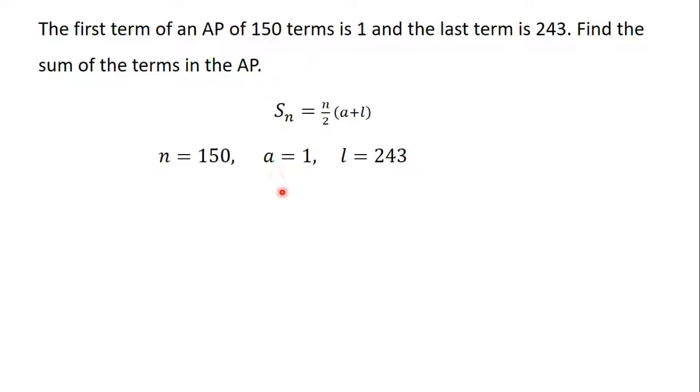The AP has 150 terms, so the sum of the terms in the AP will be denoted by S_150. So S_150 will be equal to 150/2 times (1 + 243).